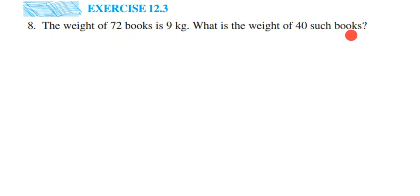So here they have given the weight of 72 books is 9 kg. So to find out the weight of 40 books, we have to know the weight of 1 book. So once we know that, we can be able to find out the answer. So let's add on what we know from the question.